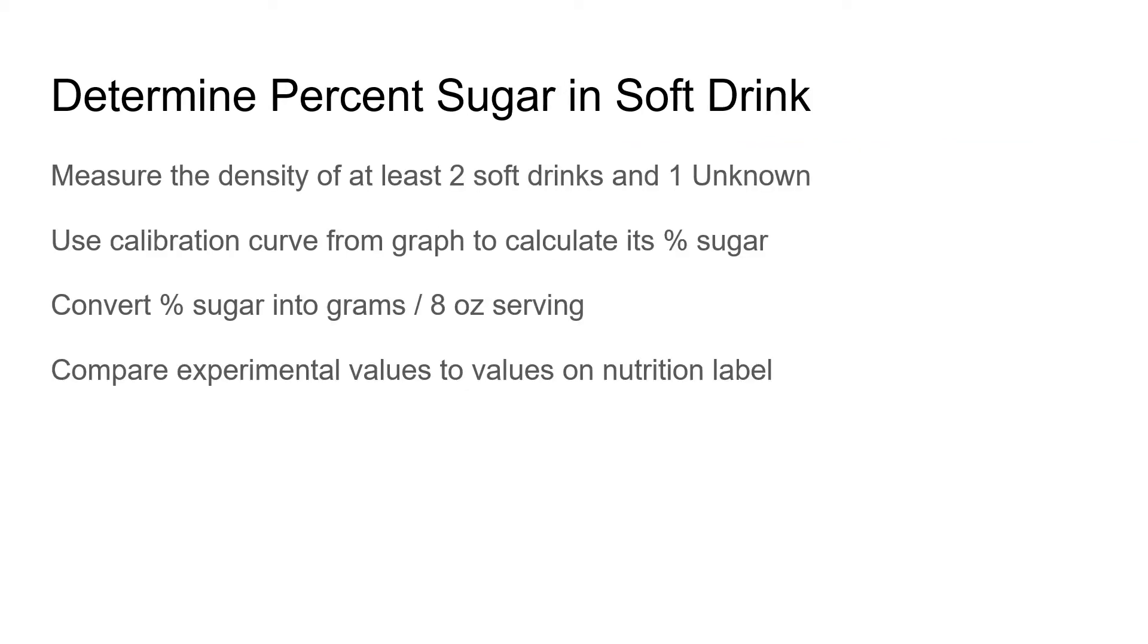After we have all those standards figured out, we're going to try and determine the percentage of sugar in some soft drinks. We're going to do the same type of thing where we weigh out 10 milliliters of those soft drinks and one unknown sugar drink. Then you can use the calibration curve to calculate the percentage of sugar in each of those samples. Once you have the percentage of sugar you can convert it into grams per serving, and then you can compare what you just calculated to the values on the nutrition label.